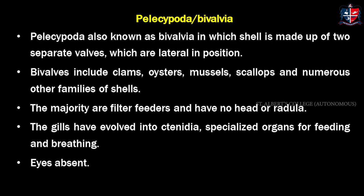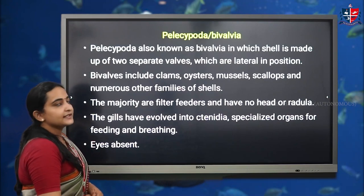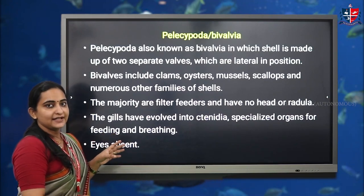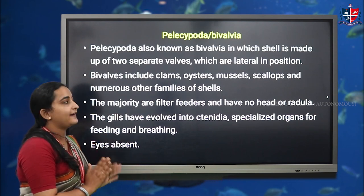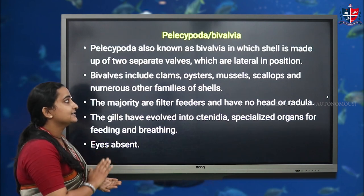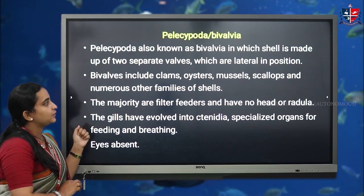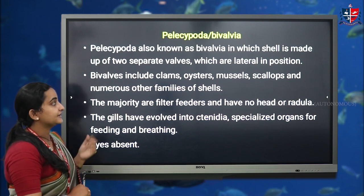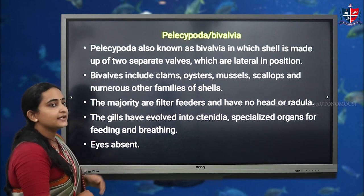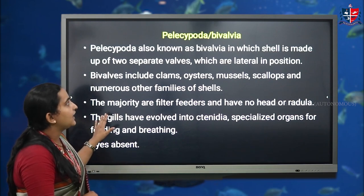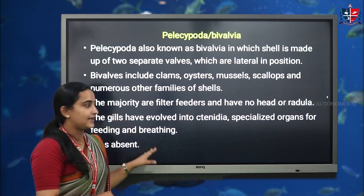The next class is Pelecypoda, also known as Bivalvia. The specialty of Bivalvia is that their body is made up of two equal shells or two valves, and the body is placed inside these laterally positioned valves. Examples include clams, oysters, mussels, scallops, and others. A key feature is that most of them are filter feeders.